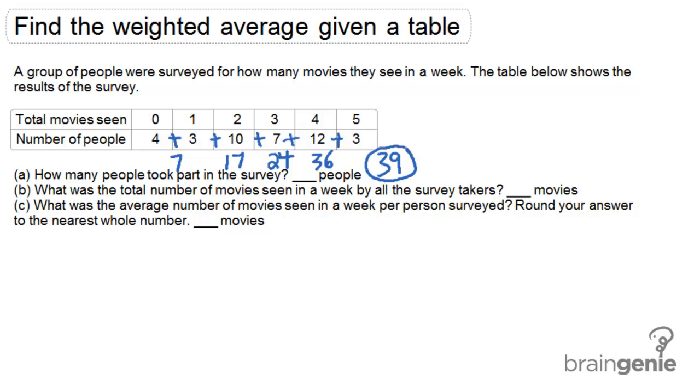For part B, what was the total number of movies seen in a week by all the survey takers? For this part, we actually have to multiply the number of people times the number of movies they've seen in a week for each of the columns. So four people have seen no movies. That adds no movies to our total. Three people have seen one movie each. That's three.